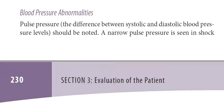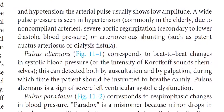Blood pressure abnormalities — pulse pressure: the difference between systolic and diastolic blood pressure levels should be noted. A narrow pulse pressure is seen in shock and hypotension, where the arterial pulse usually shows low amplitude. A wide pulse pressure is seen in hypertension — commonly in the elderly due to non-compliant arteries — severe aortic regurgitation secondary to lower diastolic blood pressure, or arteriovenous shunting such as patent ductus arteriosus or dialysis fistula. Pulsus alternans corresponds to beat-to-beat changes in systolic blood pressure or the intensity of Korotkoff sounds. This can be detected by auscultation and palpation, during which time the patient should breathe calmly. Pulsus alternans is a sign of severe left ventricular systolic dysfunction.